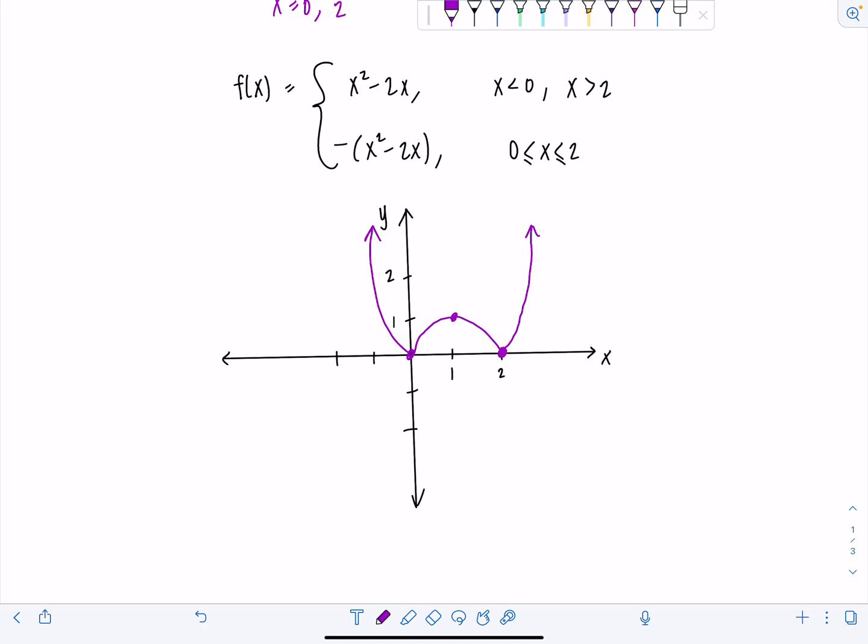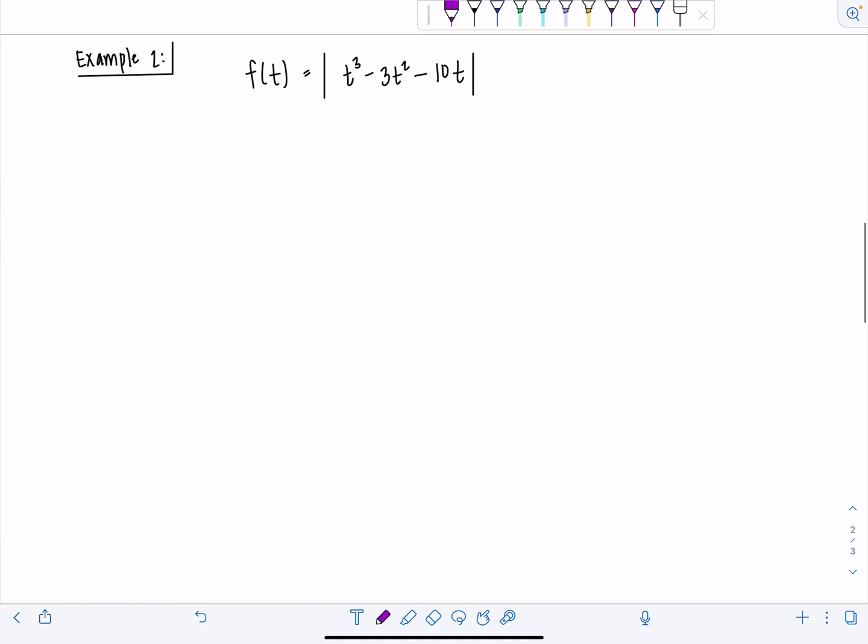Now that we have another quadratic example under control, let's look at something more advanced. Example 2, we have f(t) equals t cubed minus 3t squared minus 10t. And I'm going to show you how to rewrite this function piecewise using a slightly different approach. Remember, we know that we don't need to do anything when we take the absolute value of something that's already positive. So I basically want to know when is the stuff inside the absolute value bars already positive.